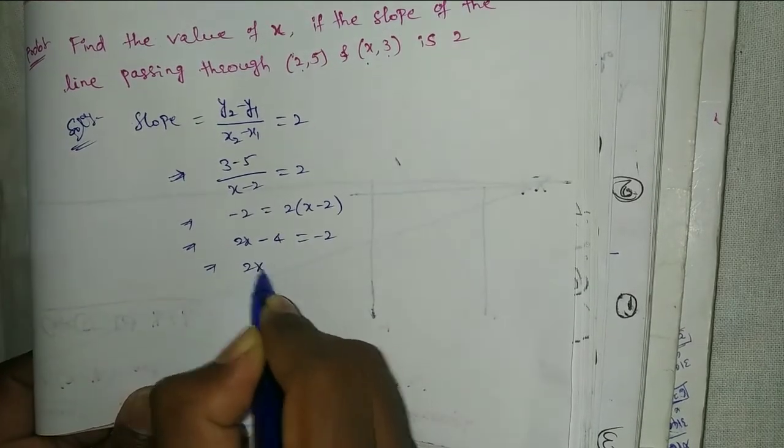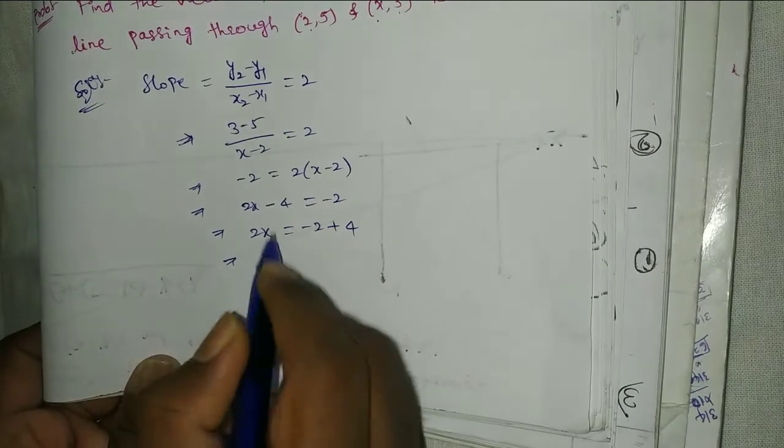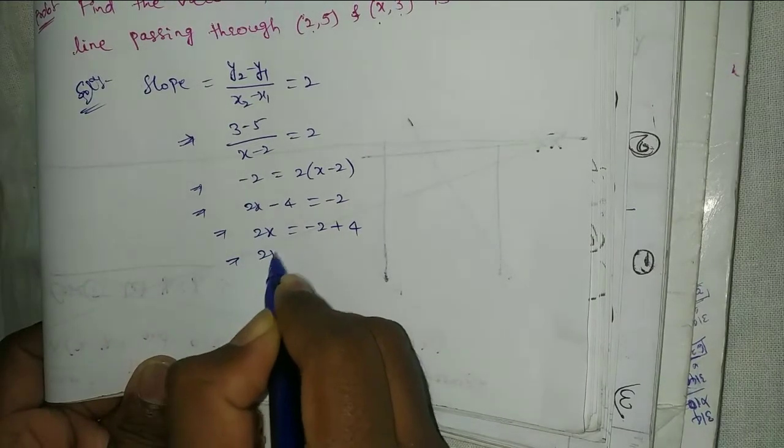That implies 2x equal to minus 2 plus 4. That implies 2x equal to 2.